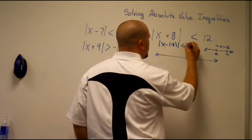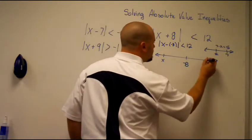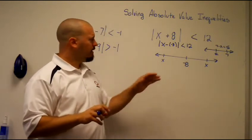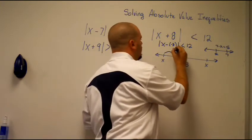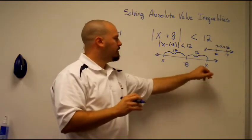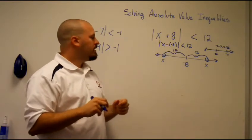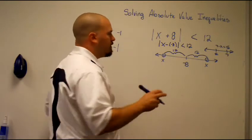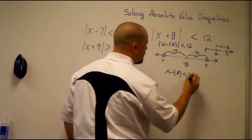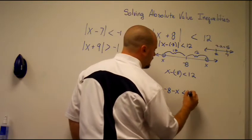So the values we're taking the distance between are negative 8 and x. x could be somewhere to the right or somewhere to the left, but the distance between them is less than 12. So if this is 12 units on each side, x has to fall somewhere between those two endpoints — it can't be the endpoints because it's strictly less than. We'll set up our two inequalities: x minus negative 8 is less than 12, and negative 8 minus x is less than 12.